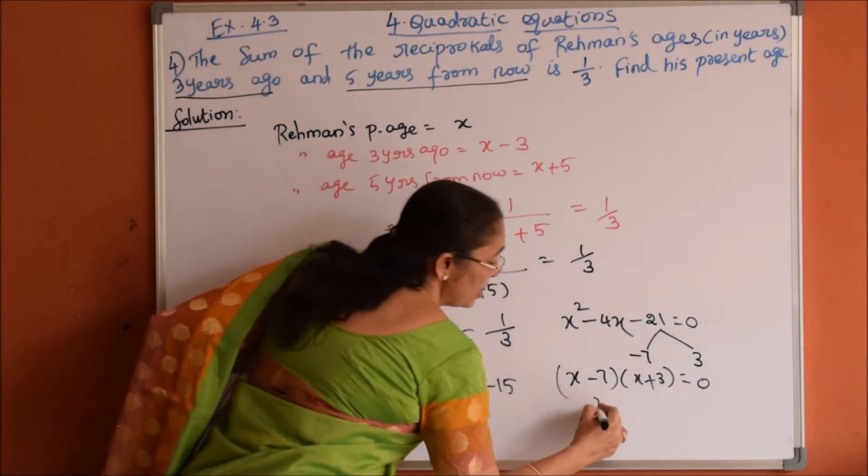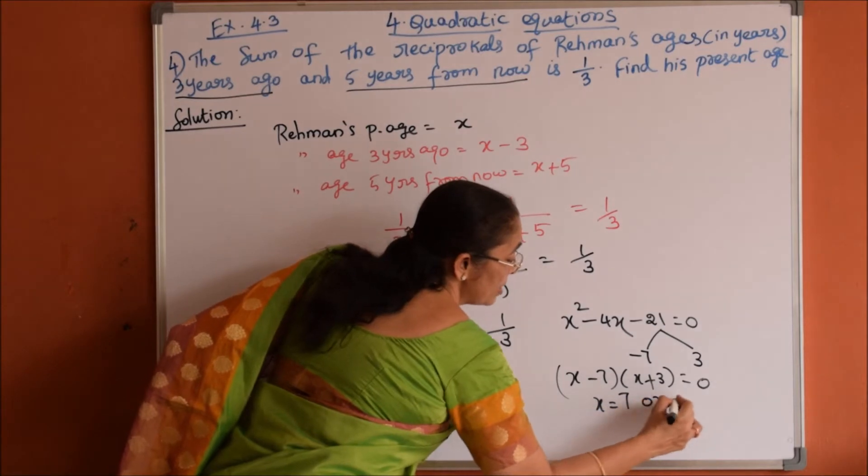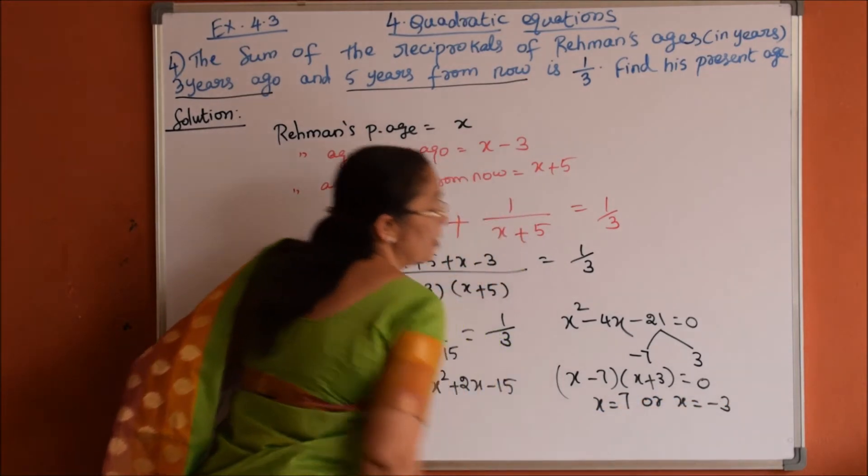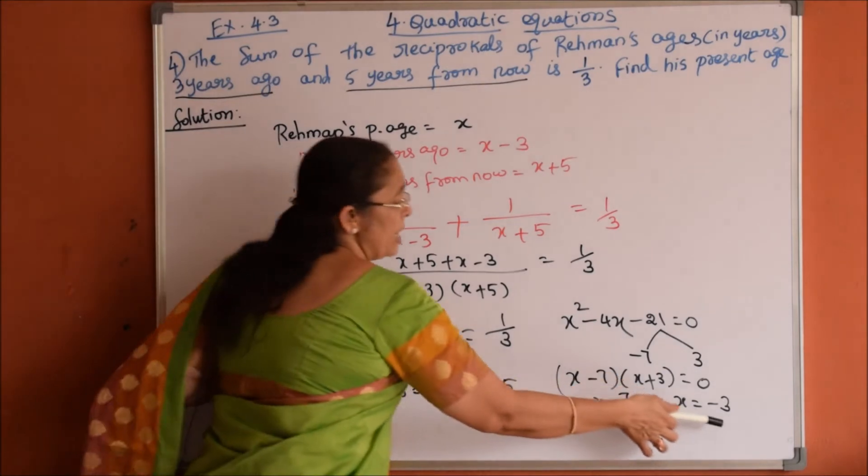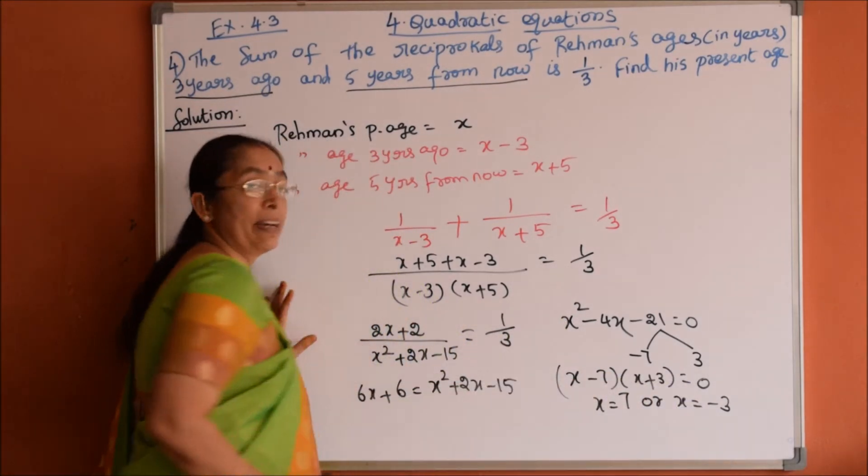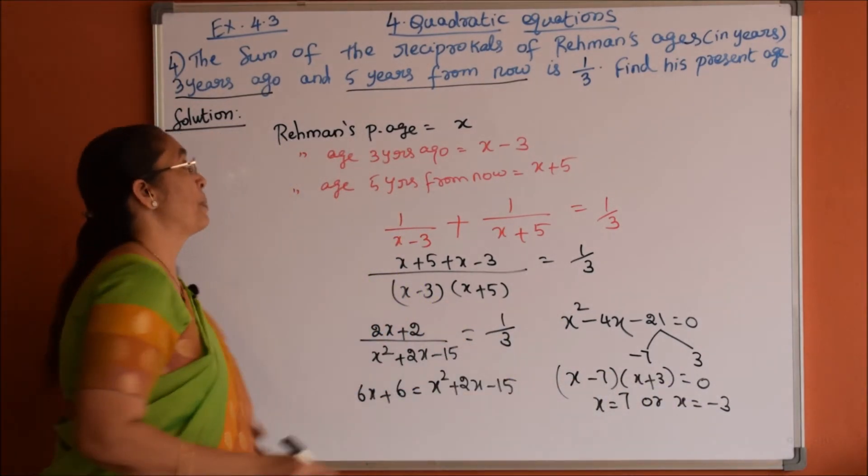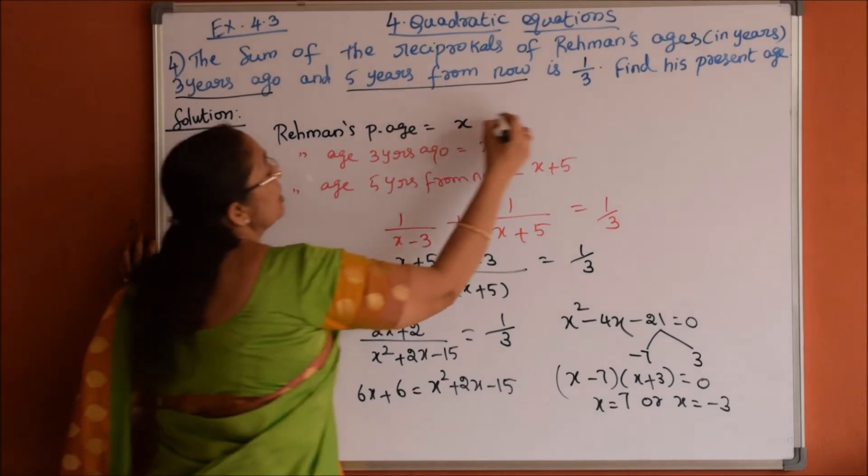Therefore x equals 7 or x equals minus 3. So x equals 7 is the correct answer, so the present age of Rahman is 7 years.